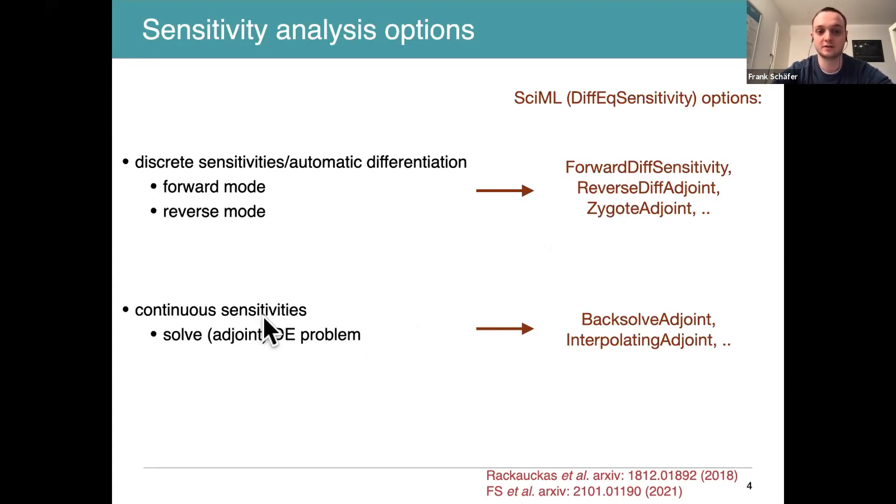We have these continuous sensitivities which rely on solving another adjoint differential equation problem, like an augmented problem backwards in time. The choices there are BacksolveAdjoint and InterpolatingAdjoint, also for ODEs QuadratureAdjoint. As Chris showed in one of his papers and mentioned in the previous talk, it's not always clear which of these options you want for a given system, because these continuous sensitivities can be unstable.